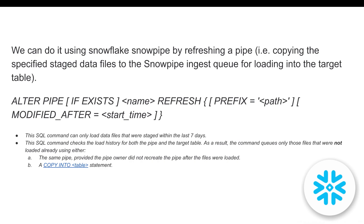Important points to note: the ALTER PIPE REFRESH command can only load data files ingested within the last seven days — you cannot load data from the past 30 days. The command checks the load history from both the pipe and the target table, and queues only files not already loaded by any COPY command or the same pipe. This prevents duplicate loading.